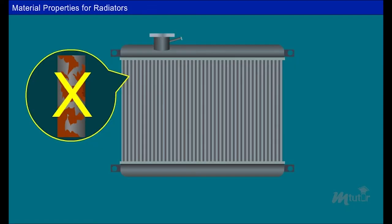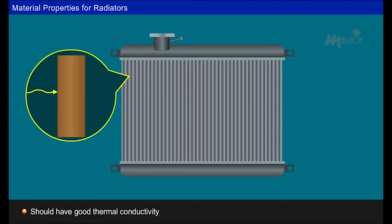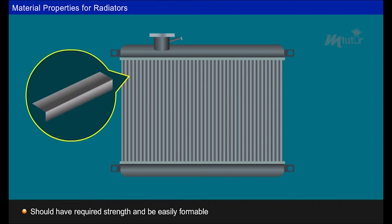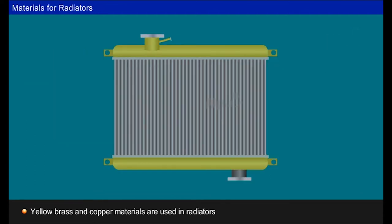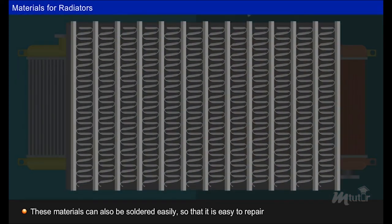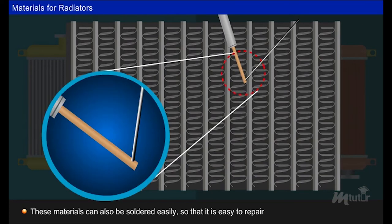The materials used for radiators should have good corrosion resistance. They also should have good thermal conductivity. The materials should have required strength and be easily formable. Mostly yellow brass and copper materials are used in radiators because they meet all required properties. These materials can also be soldered easily so that it is easy to repair.